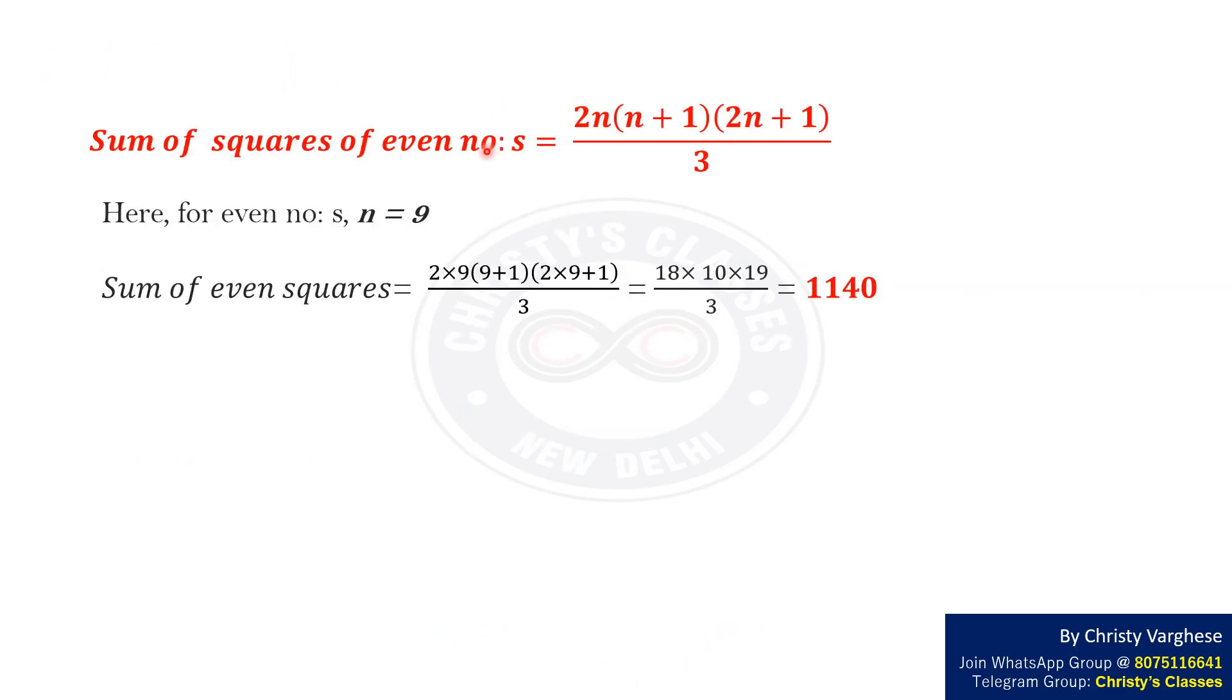Sum of squares of even numbers equals 2n into n plus 1 into 2n plus 1 by 3. Here in case of even numbers n equals 9. Therefore sum of even squares equals 18 into 9 plus 1 into 18 plus 1 by 3. That is 1140.